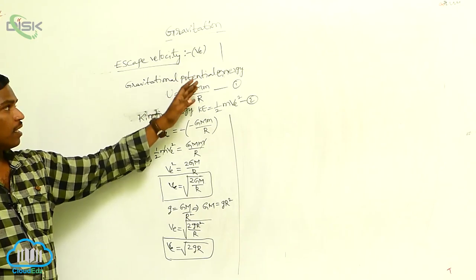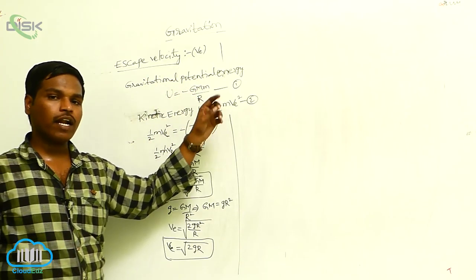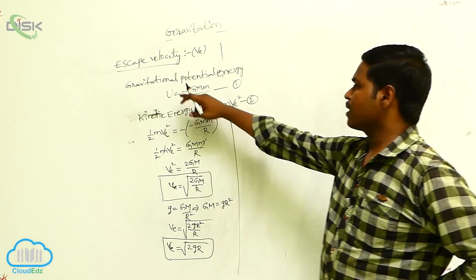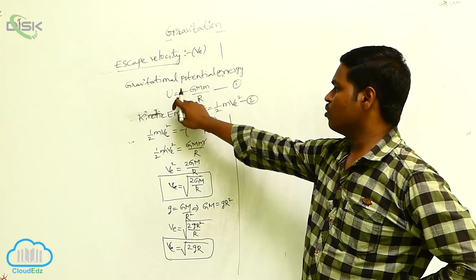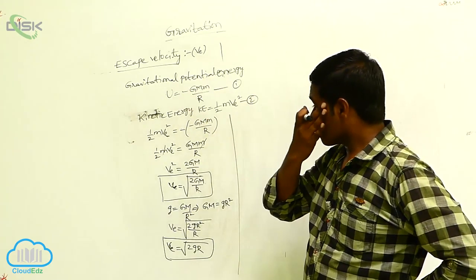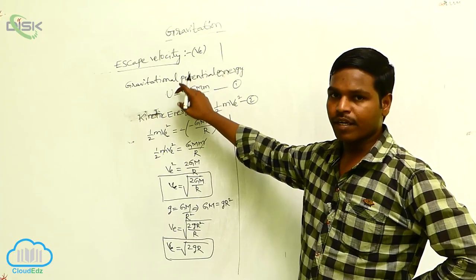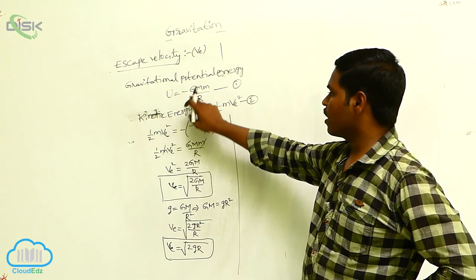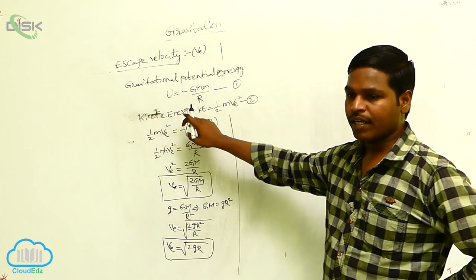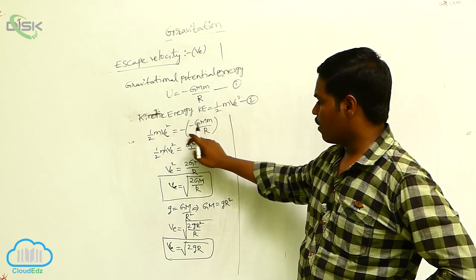Escape velocity means the minimum velocity required for an object to escape from the earth's gravitational field. The gravitational potential energy U is equal to minus GMm by R. To escape from the earth's surface, that object needs gravitational potential energy of magnitude GMm by R, and it has kinetic energy half m Ve squared. These two are equated.